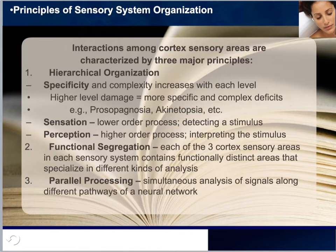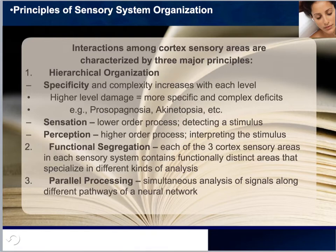The third major principle is parallel processing. It was once believed that the different levels of the sensory hierarchy were connected in a serial fashion, where information flows through just one pathway. Think of old-style Christmas lights: if one bulb breaks, the entire set goes out. Recent evidence suggests the sensory system operates more like a parallel system, allowing information to flow through multiple pathways simultaneously — the simultaneous analysis of a signal in different ways by the multiple parallel pathways of a neural network.